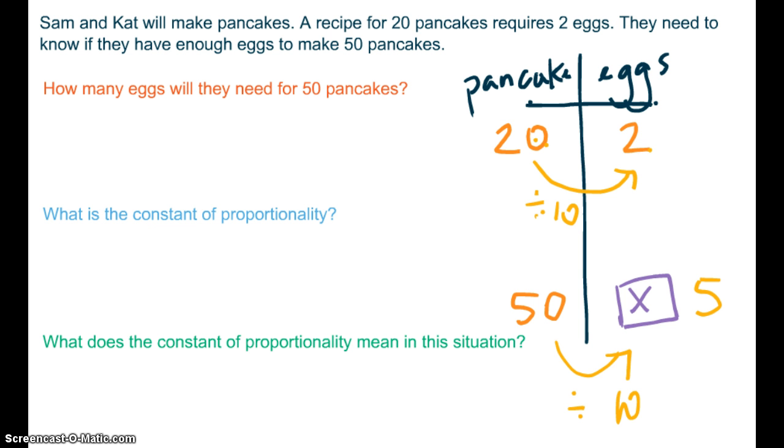Alright, hold on guys. I have one more strategy to show you. And all of these are perfectly fine. You pick the one that works best for you. Alright, what if this time I found the unit rate? In other words, how many pancakes could I make with one egg? 2 divided by 2 is 1, so 1 egg. 20 divided by 2 is 10. 1 egg will make 10 pancakes.